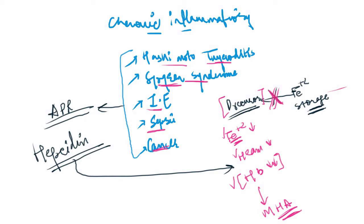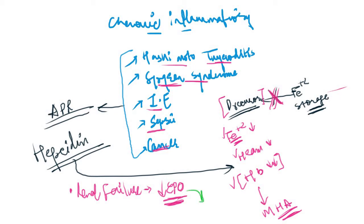Another cause of anemia of chronic disease is renal failure. In renal failure, there is defective production of erythropoietin, and erythropoietin is essential for erythropoiesis. As a result of decreased erythropoietin levels, there will be decreased red blood cell production, leading to anemia — which is the anemia of chronic disease.